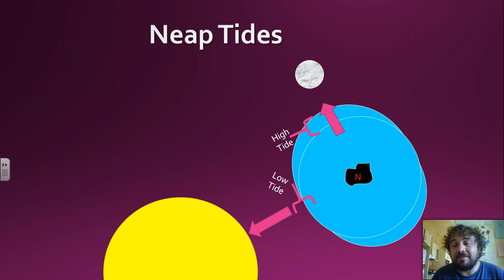Then you've got the Neap Tides, which is a very cute name. And these are our lowest High Tides. So we sometimes call the Spring Tide the King Tide. It only happens a couple times a year. So you've got the King Tide and the Spring Tide, sorry, and the Neap Tides.